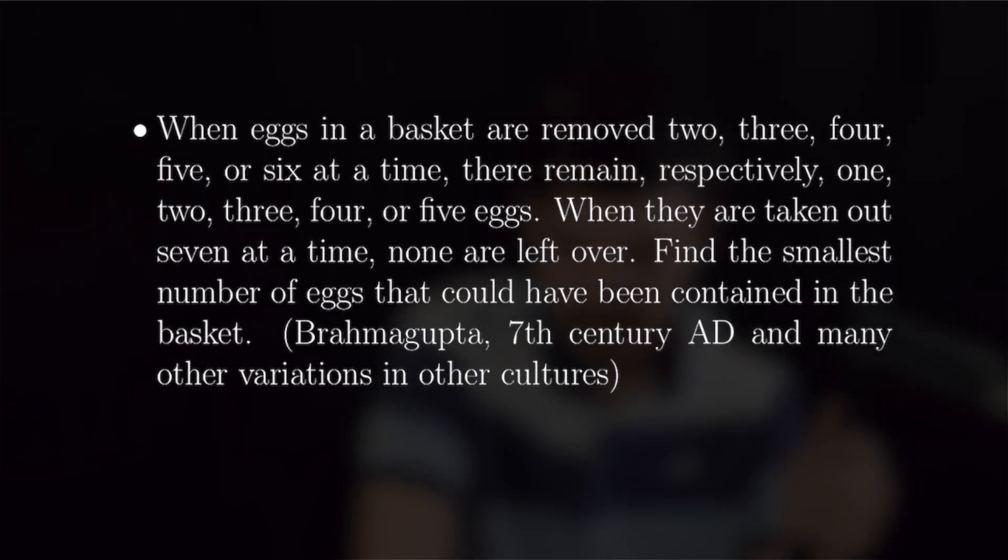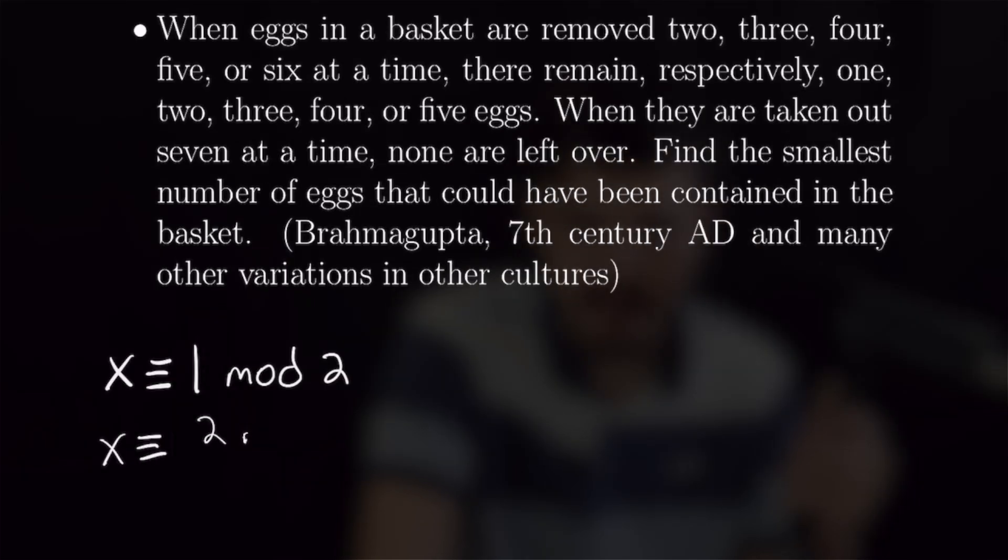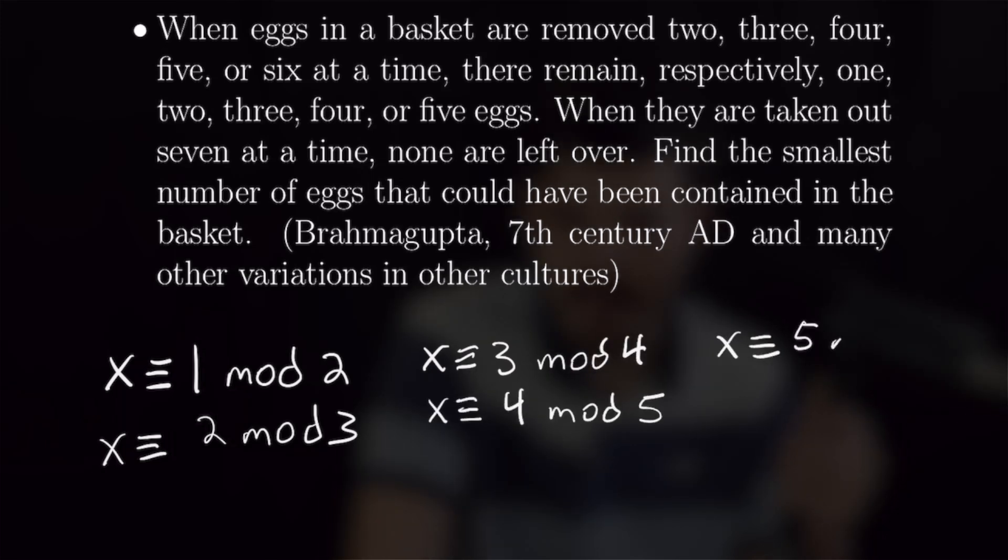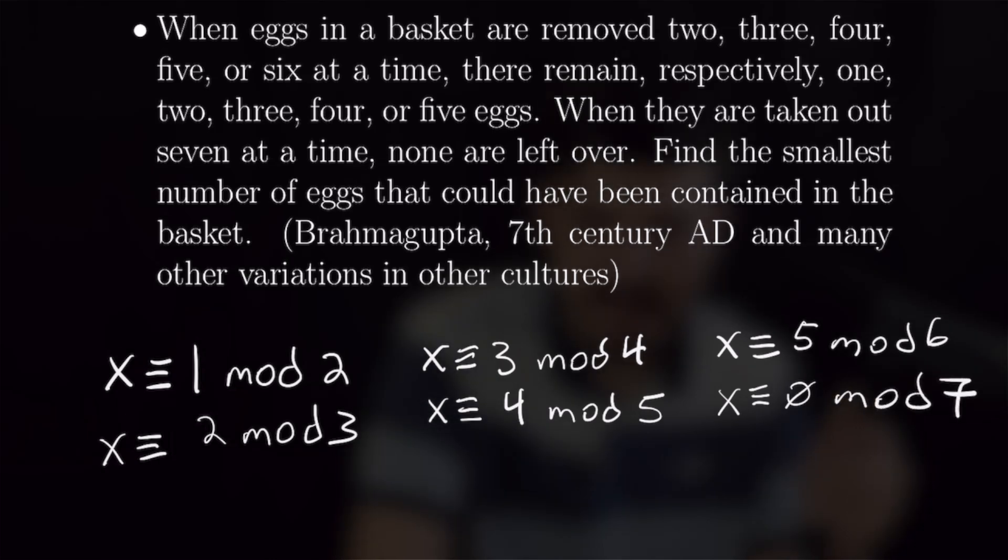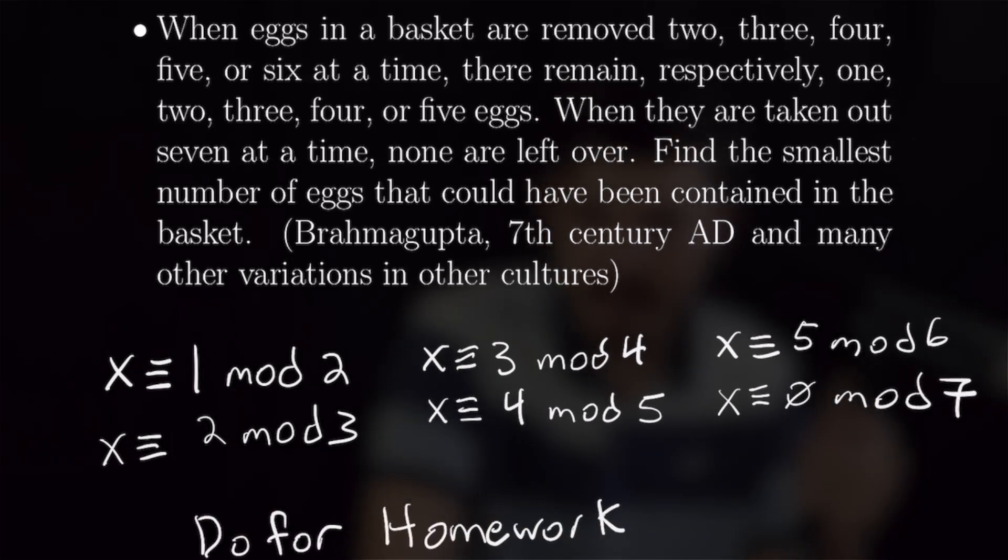We want to find the smallest number of eggs that could have been contained in the basket. That's going to be done solving a system of congruences. So when eggs are removed two at a time, there is one remaining, so that means x is congruent to one mod two. By the same logic, we can set up all these other equations: x is congruent to two mod three, x is congruent to three mod four, congruent to four mod five, five mod six, and zero mod seven. I'm going to leave that for you guys to do for homework. Feel free to post in the comments what you got and how you got there.